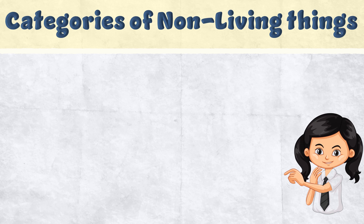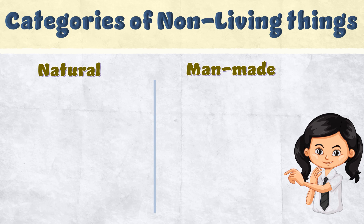Non-living things can further be categorized under two types: one is natural non-living things, and the other one is man-made non-living things.